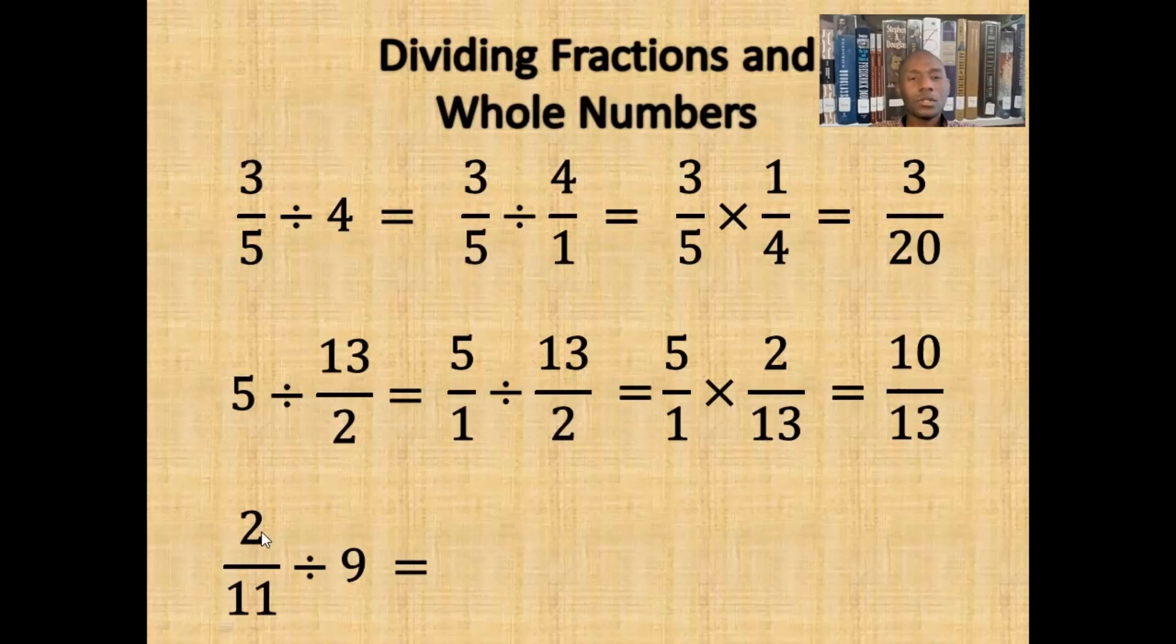To divide 2 elevenths by 9, we would first write the 9 as a fraction. So this becomes 2 elevenths divided by 9 wholes. Then we would use keep change flip. And it turns into 2 elevenths times 1 ninth. And we would multiply the fractions to get 2 ninety-ninths.